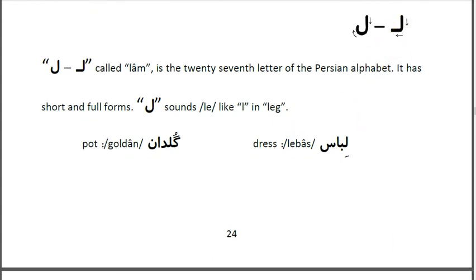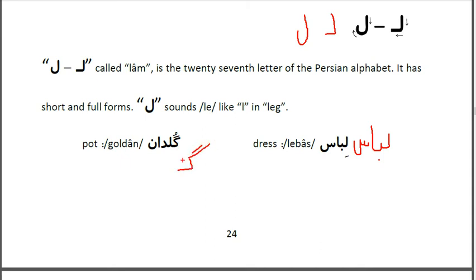The next letter is 'Lam.' The name is Lam and it has two forms. The short form is easy — just a vertical line and then a horizontal line. The full form is also easy. Lam sounds like 'L' in English. The first sample word is 'Labos' — labos means dress. The second sample word is 'Goldon' — goldon.